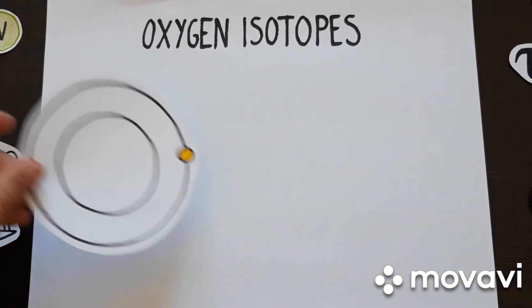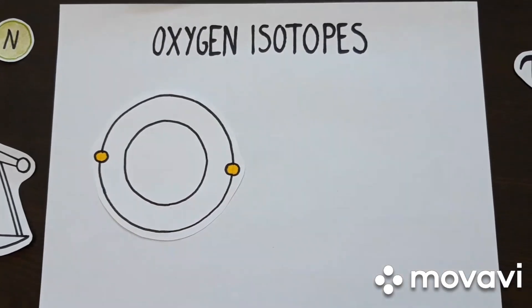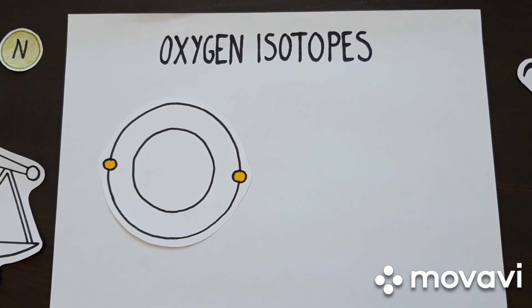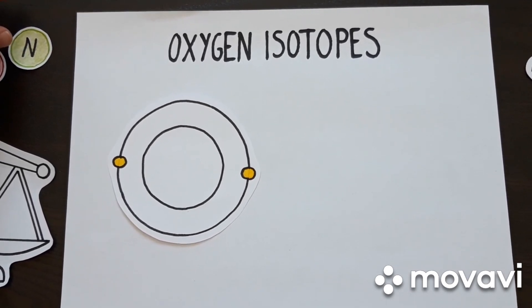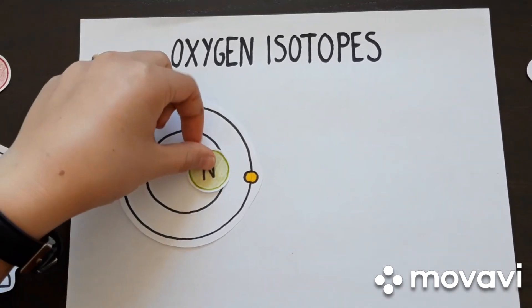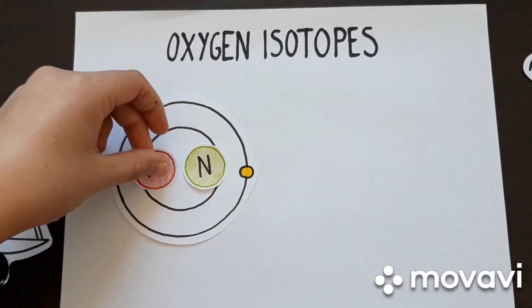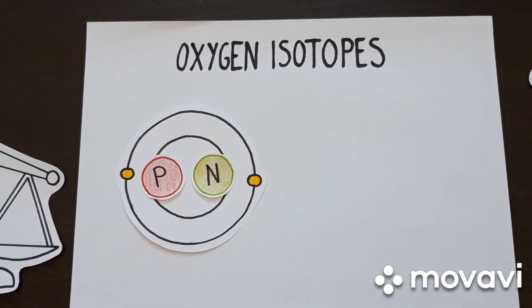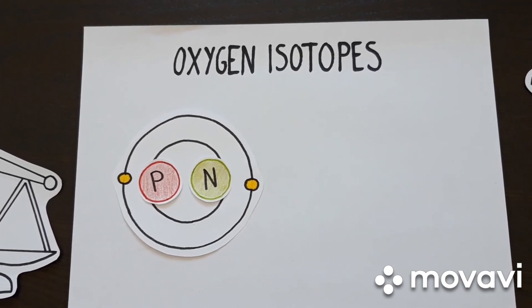All matter around us is made up of atoms. These atoms in turn consist of a heavy core with a number of electrons circling around it. There are two different types of particles in this atomic nucleus, protons and neutrons. The number of protons determines which substance we are dealing with. The role of neutrons is to keep the nucleus of the atom together.